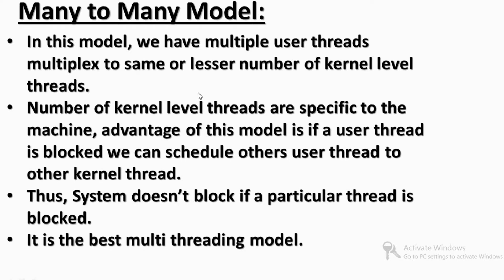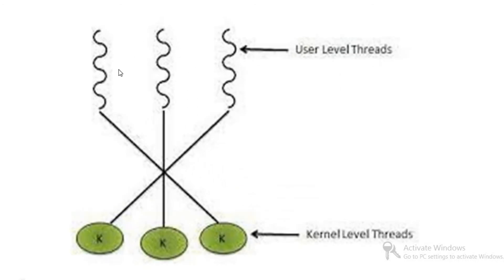It is the best multi-threading model. In the many-to-many model, many user-level threads are mapped to many kernel-level threads. If you look at the diagram, here are user-level threads and kernel-level threads — for example, 3 user-level threads and 3 kernel-level threads mapped together.